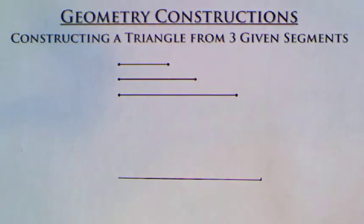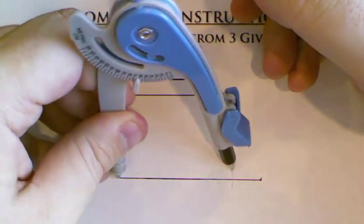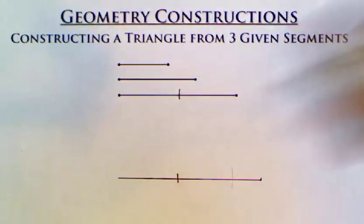So you have to remember how to construct a copy of a line segment. Make a line obviously bigger than the one we're trying to copy. Open up our compass to be that size and come down here and make a mark. This is our first side of our triangle.